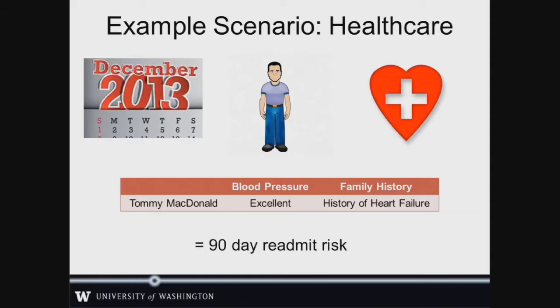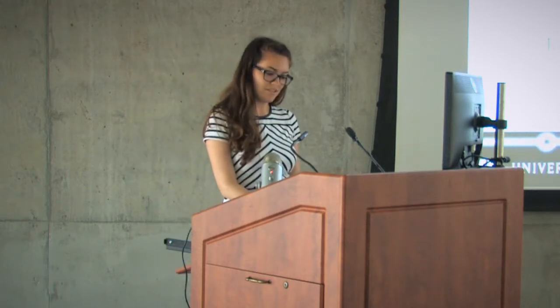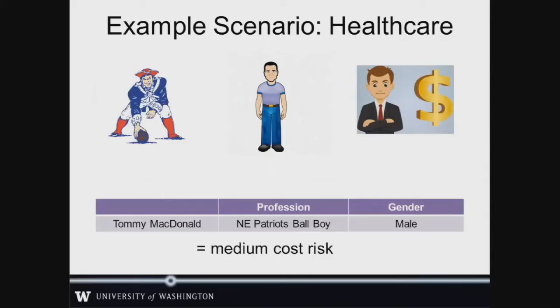As an example, let's consider our friend Tommy McDonald. While Tommy was taking a Christmas vacation to Seattle, he had to be admitted to the hospital. Using their model built from only their data, Tommy's doctors decided he was a relatively low 90-day re-admission risk. Now Tommy also has an insurance company back in his home state of Massachusetts. Using the model they built from only their completely different data, they decide that he is probably going to cost about average in the coming quarter — a medium cost risk for their company.